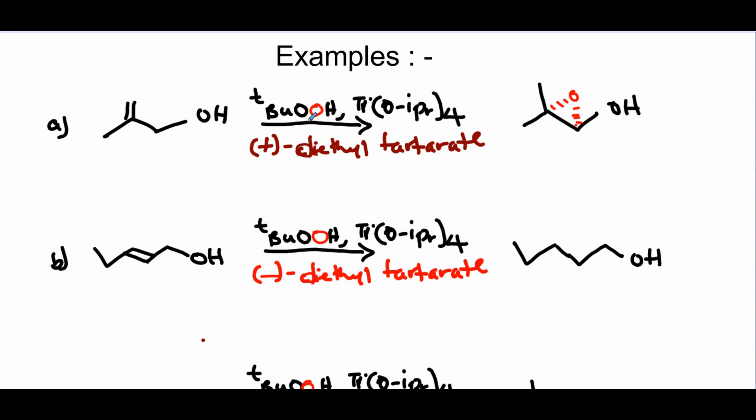For the examples, the first question: the oxygen that makes the epoxide comes from the tert-butyl hydroperoxide. That's why I drew it in red to suggest that. But again, you have to be careful to check what type of stereoisomer of the chiral ligand are you given.